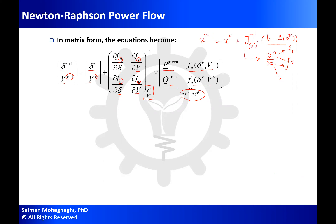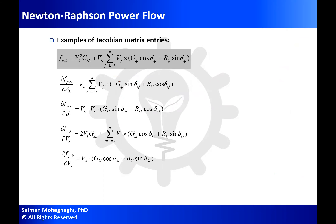Formulating the Newton-Raphson power flow is quite simple. All you have to do is find the derivatives of those equations with respect to deltas and Vs, update the values based on the latest delta and V, invert that matrix, and multiply by that vector. For a small enough system you can find the derivatives directly; for a larger system you do this parametrically. Let's go back to the equation for active power.